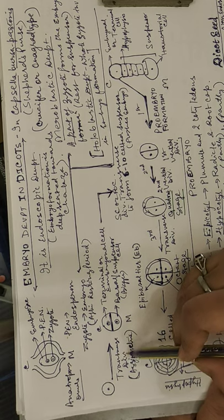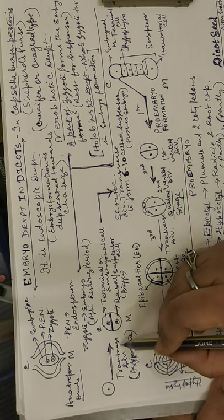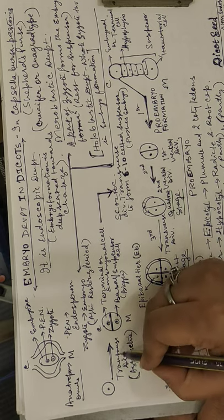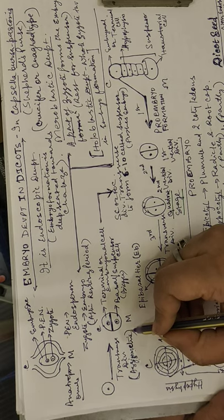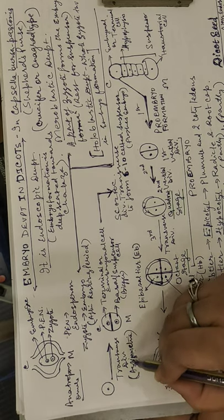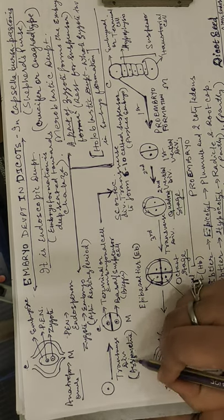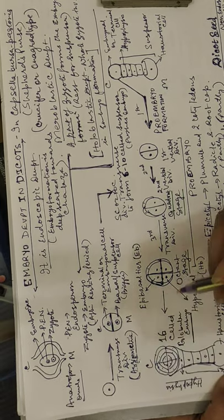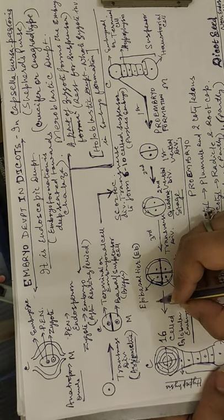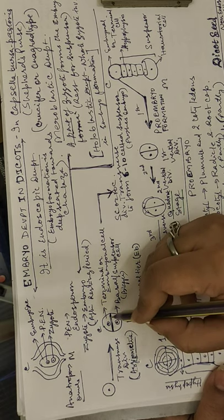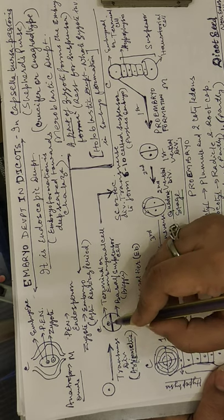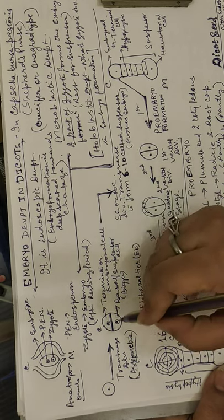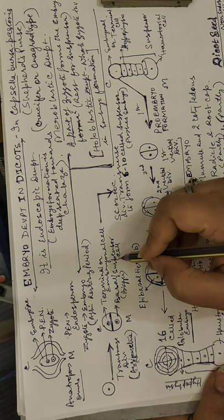Once the zygote has completed its resting period, it divides. The first division of the zygote is always transverse and also asymmetric — meaning the two daughter cells are unequal. One is small and one is large. The smaller cell is called the terminal or embryonal cell, and the larger cell is called the basal or suspensor cell.